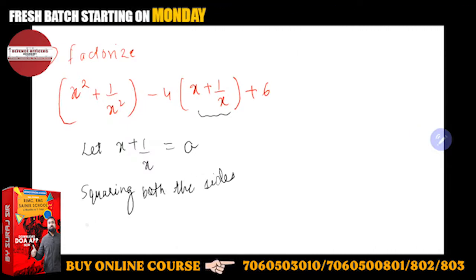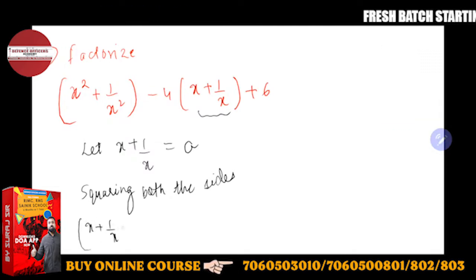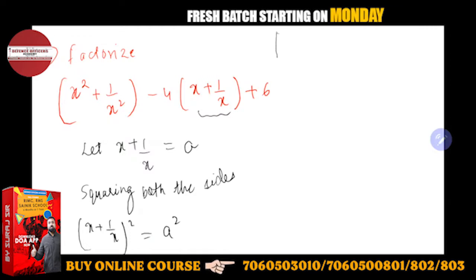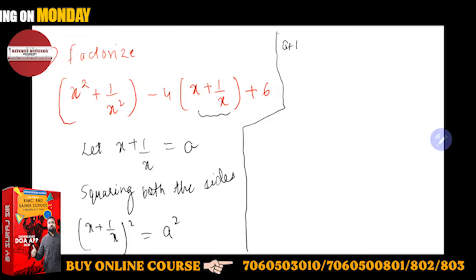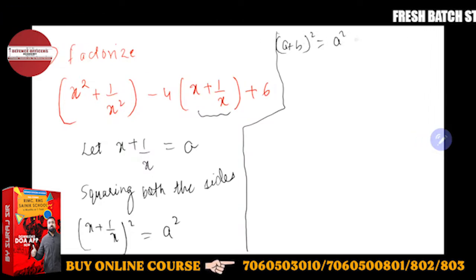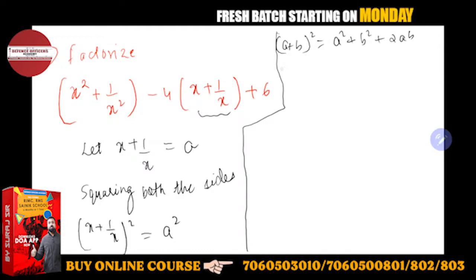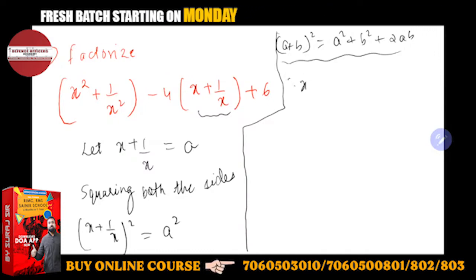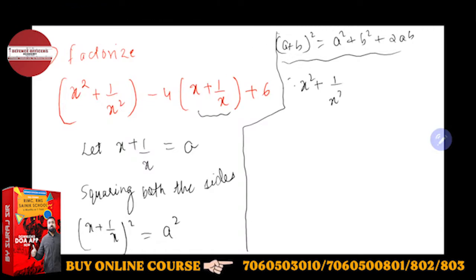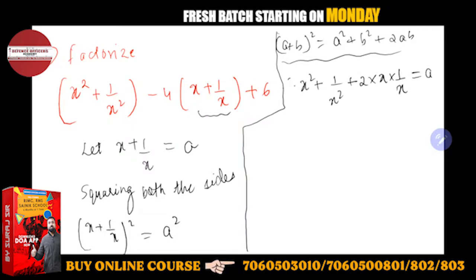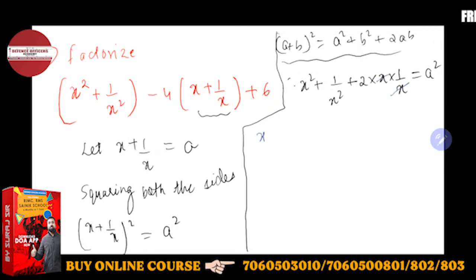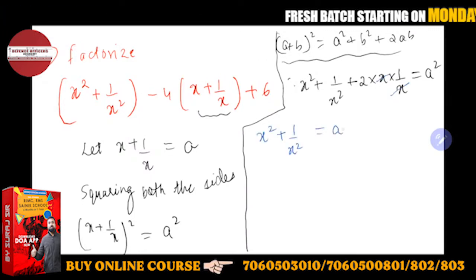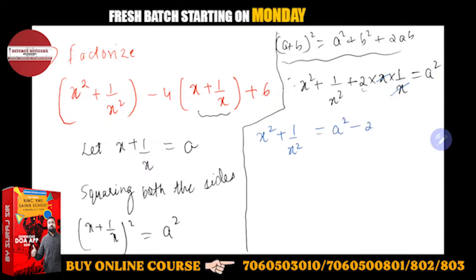Squaring both the sides, kya ho jayega — x plus 1 upon x ka whole square is equal to a square. Left side mein a plus b ka whole square lagega. You should know this formula: a plus b ka whole square is nothing but a square plus b square plus 2ab. So it will be x square plus 1 upon x square plus 2 into x into 1 upon x equals a square. The x terms cancel, so x square plus 1 upon x square is equal to a square minus 2. This 2 I have taken to the right hand side.